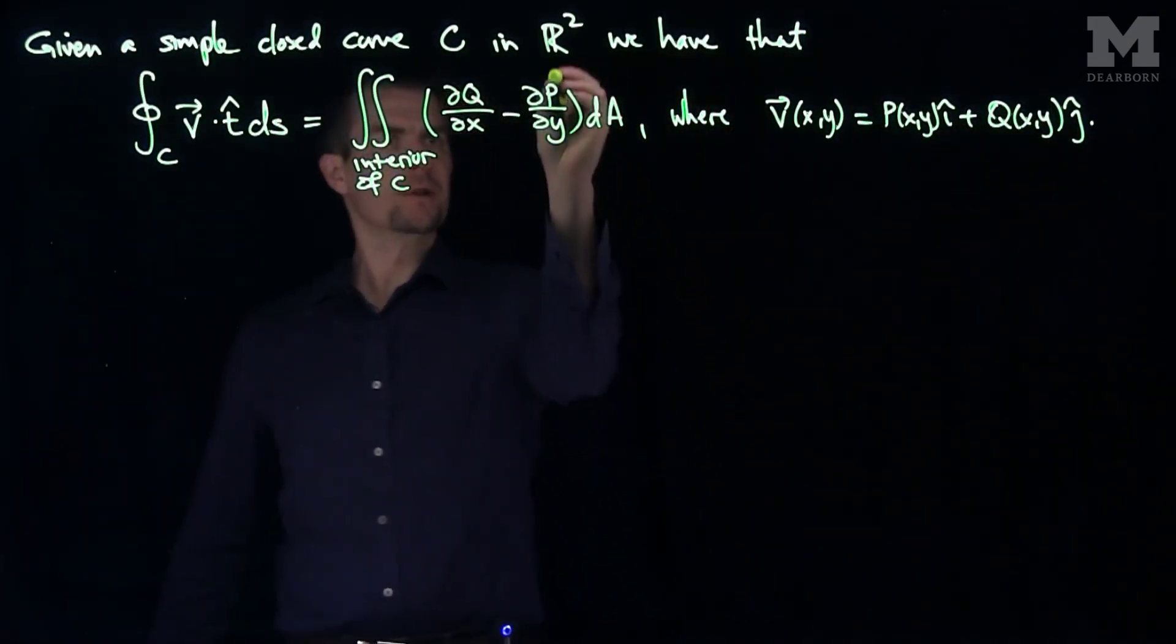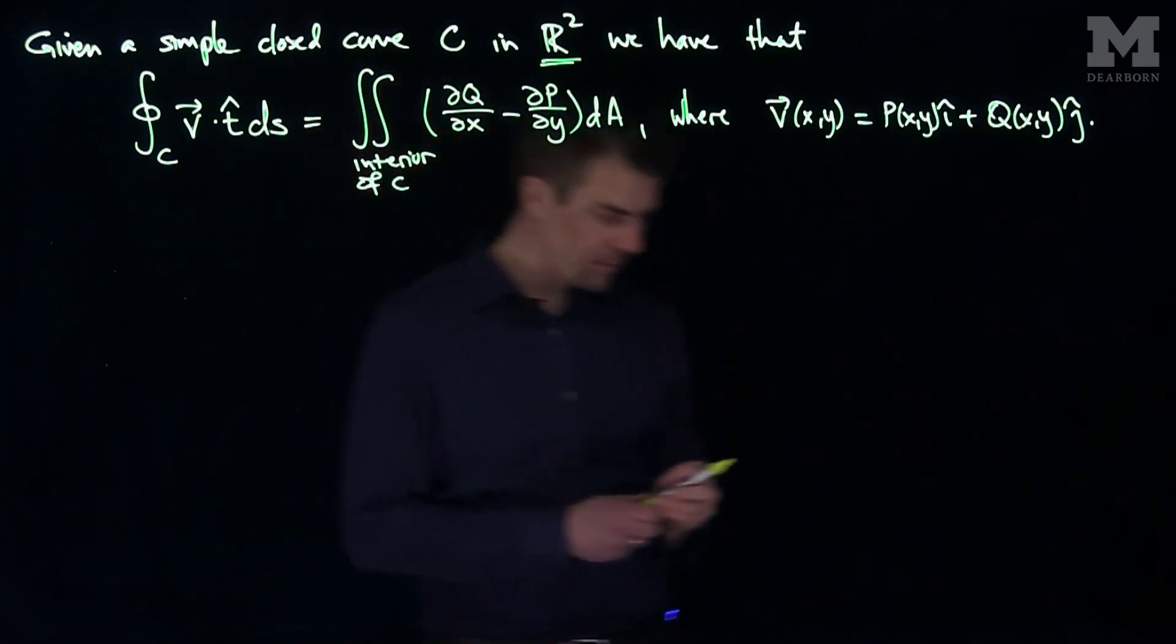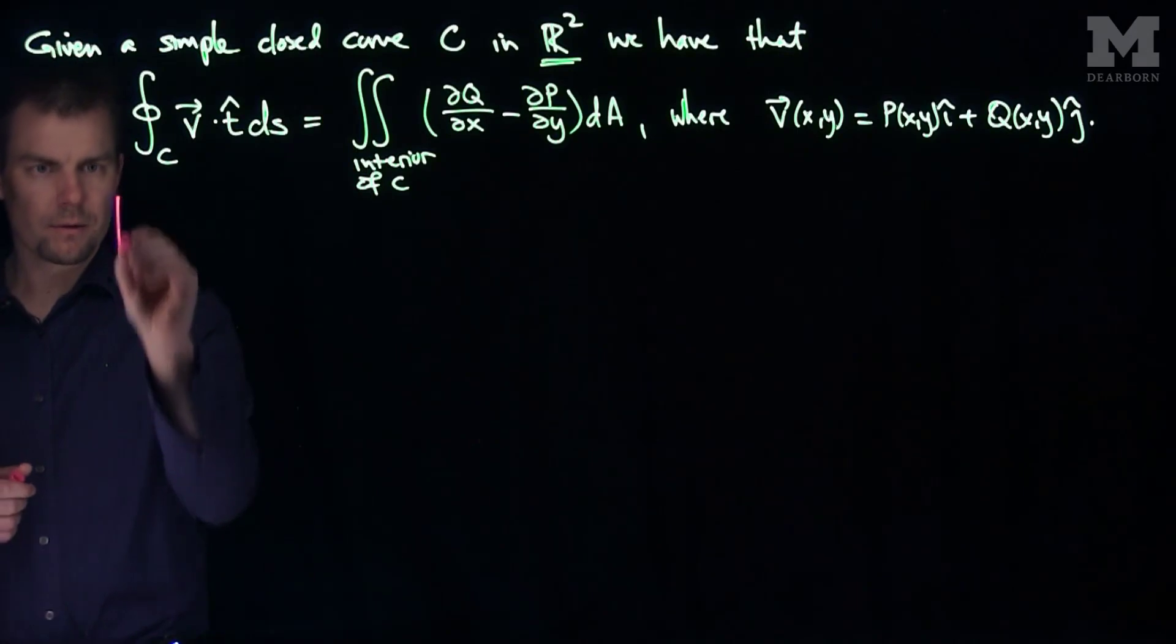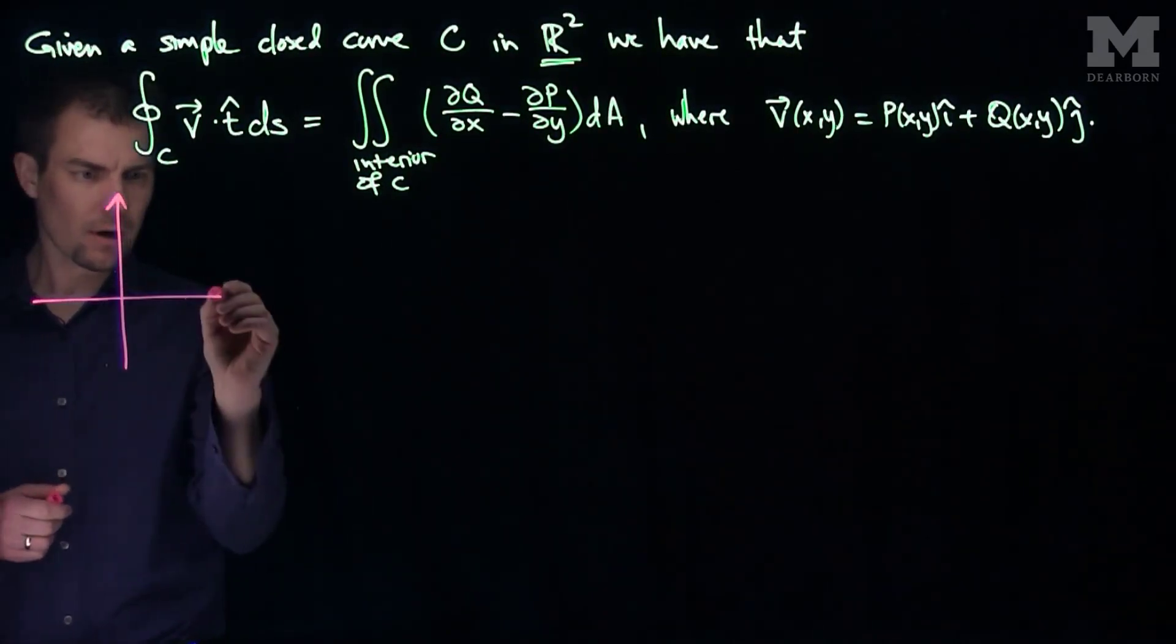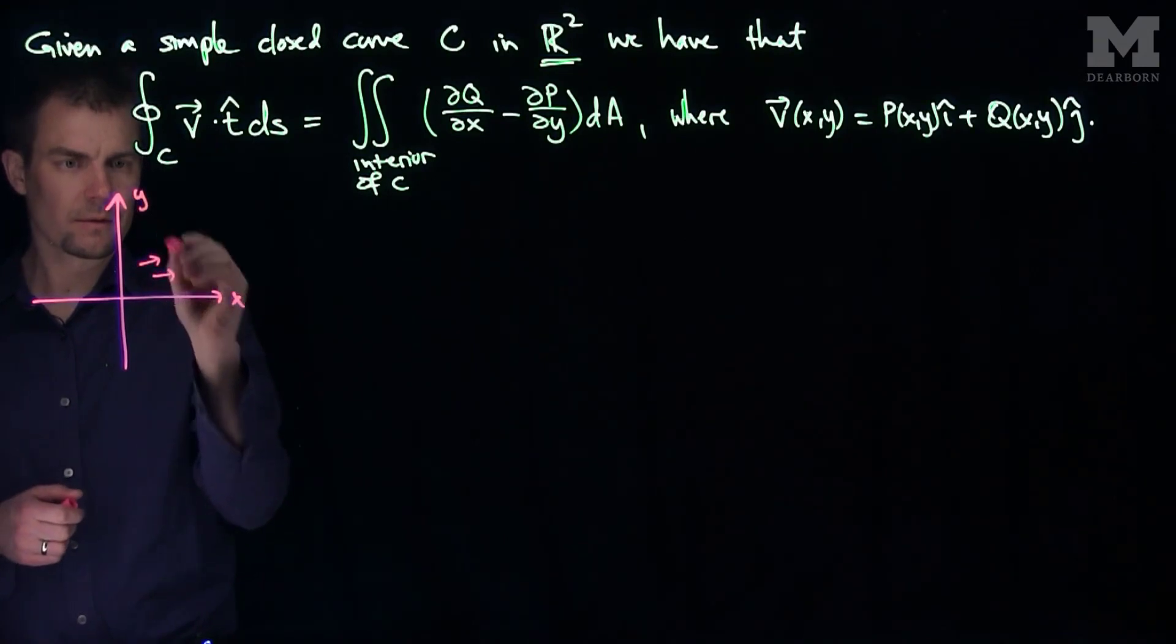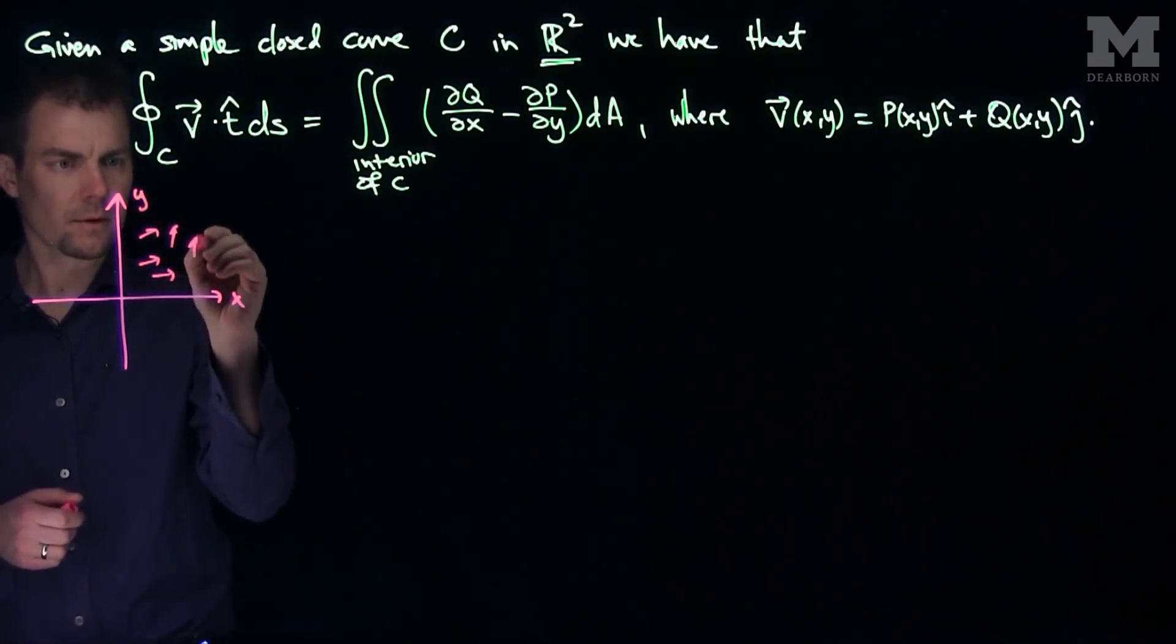And so in particular, remember that Green's Theorem is a two-dimensional thing, it only works in the plane. So the context of Green's Theorem is the following: what you have is R², here's your x and here's your y. You have a vector field, there's your vector field.